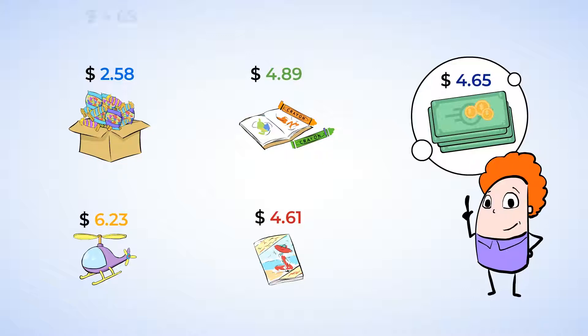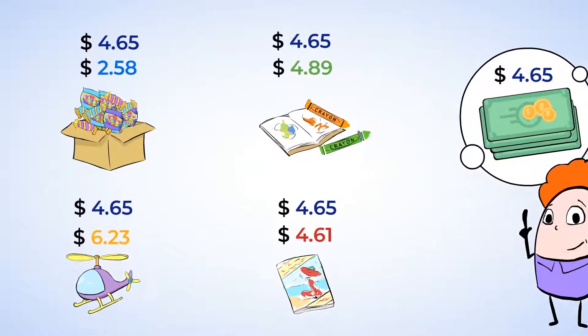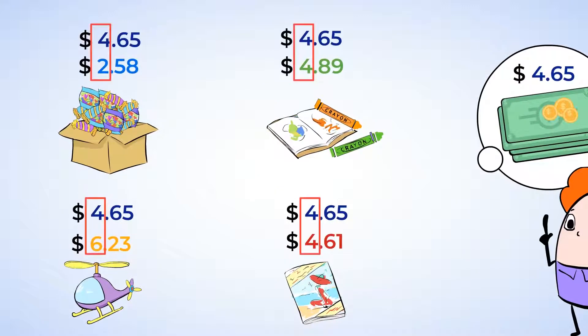When we compare numbers, we want to line them up vertically and look at the largest place value first. In this case, we would start by comparing the ones place. Let's compare the price of each item to the money in your pocket and see what we can afford to buy.